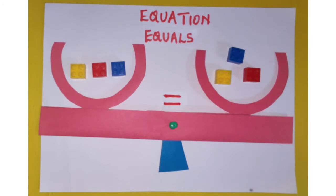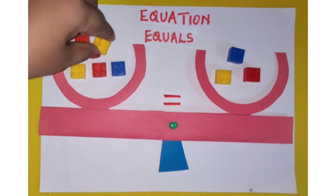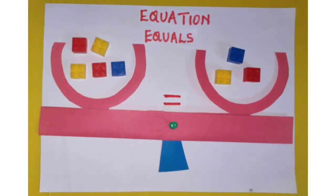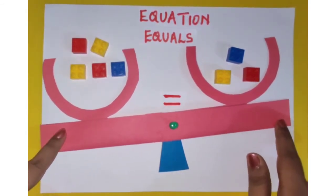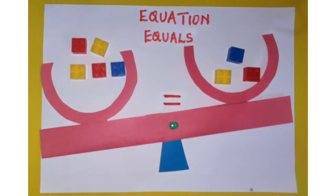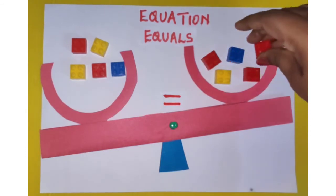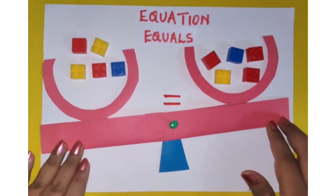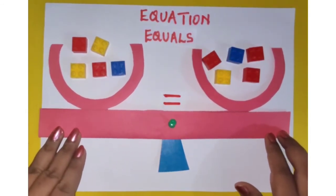Whatever mathematical operations we use, we have to use them on both sides to keep it balanced, that is equal. So let me add two more blocks to the left-hand side — the scale will get unbalanced again. In order to balance it, I will have to add two more blocks to the right-hand side as well, and it gets balanced again.